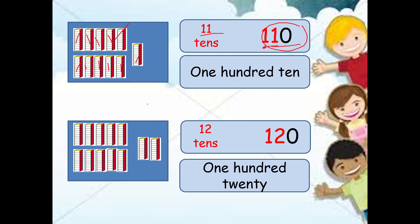How about the next example? One, two, three, four, five, six, seven, eight, nine, ten, eleven, twelve. We have here twelve tens. So you will write that as twelve and add zero. But how will you read this, KGs? Again, remember in three-digit numbers the first digit means hundreds. So this is one hundred twenty, because two and zero is twenty. Again, one hundred twenty. Very good.